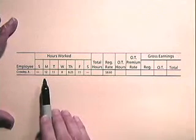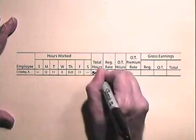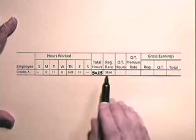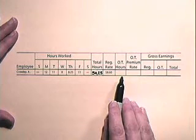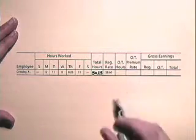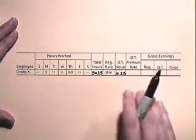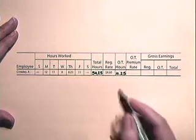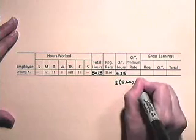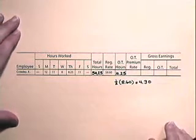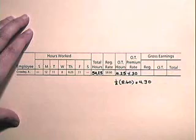We will add up the hours worked here by our employee, and we'll see that these hours add up to 50.25 hours. The regular rate is $8.60. The overtime hours — all hours worked over 40 hours in a week qualify for overtime. So we have 10.25 hours of overtime, which is 50.25 subtract 40. The overtime premium rate is when the employee is paid one-half of the regular rate, which is one-half of $8.60, which is $4.30 for each hour over 40. So the overtime premium rate is $4.30.